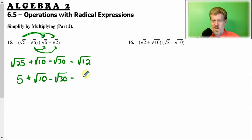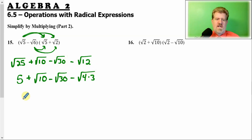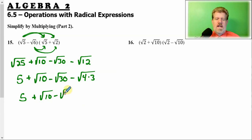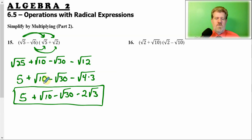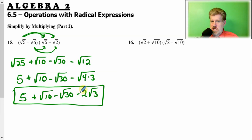12, however, is 4 times 3, and the 4 is good because it's a perfect square — we can take it out. So the square root of 4 is 2; the 3 stays underneath. Now actually this is your answer, because there is nothing we can do to simplify it further. We can't break up radical 10, radical 30, or radical 3. They're not like terms; we can't combine them. So this monstrosity is the correct answer.